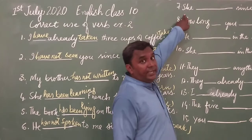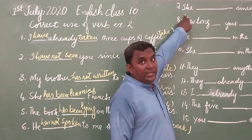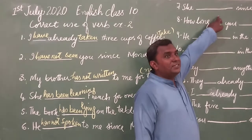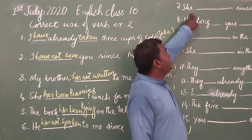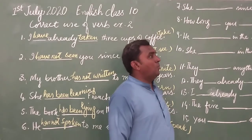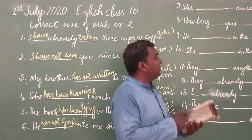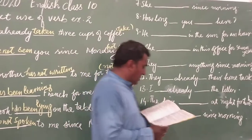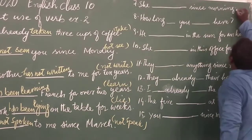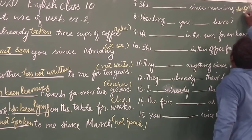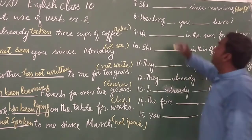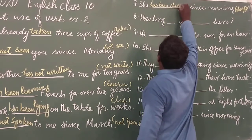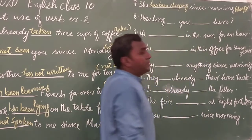Dear students, next we have sentence number seven: 'She dash since morning.' The verb here will be 'sleep' — we will take it in present perfect continuous tense. So it becomes: She has been sleeping since morning.